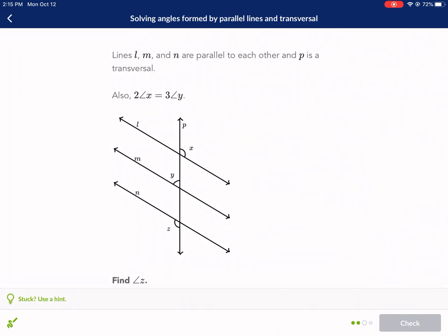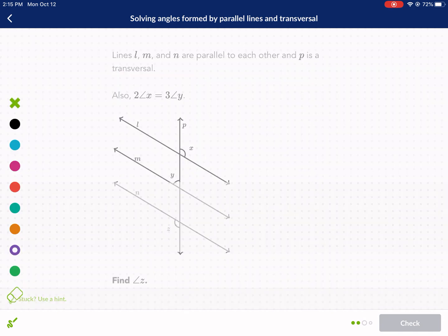We have three lines, it looks like they're all parallel. P is the transversal. We have angle two, hold on, I think it's saying that if we multiply the angle x by two, it's going to be equal angle three times three. So whatever x is, we multiply it by two, and it's going to be equal to three y. I got the colors backwards. Let me do this.